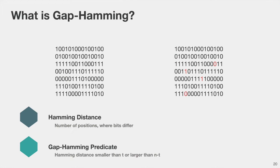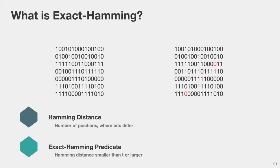So what is this gap Hamming distance predicate? Consider two bit strings. The Hamming distance is defined as the number of positions where the bits differ. The gap Hamming predicate asks: is the Hamming distance between those two bit strings smaller than some parameter t, or is it larger than n minus t, where n is the input bit length? This predicate can basically tell us whether those inputs are very similar or very different, but for anything in this gap, the hash function from previous work could not make any statements. A stronger predicate is the exact Hamming distance, where we only have one parameter t, and we would like to know whether the Hamming distance is smaller than t or larger than t — i.e., exact Hamming distance is just gap Hamming with a gap of 0.